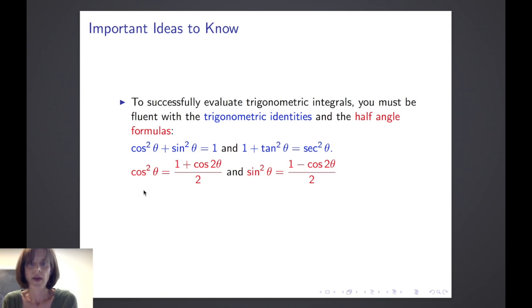We also must know the half angle formulas. Cosine squared theta equals 1 plus cosine of 2 theta divided by 2, and sine squared theta equals 1 minus cosine of 2 theta divided by 2.